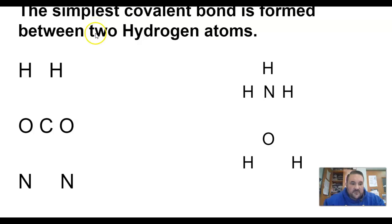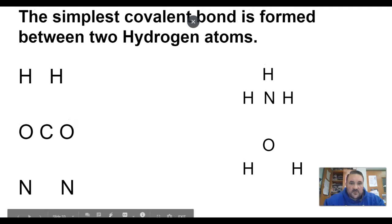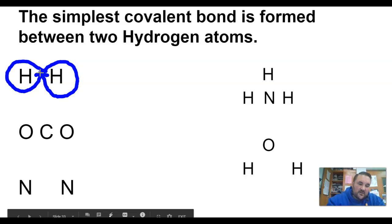So we often show how to look at covalent bonds by using electron dot diagrams. An electron dot diagram just draws in the valence electron, so hydrogen has one valence electron. This hydrogen has one valence electron, so they make a single bond. Sometimes they're over here, sometimes those electrons are over there, but they're full because they share two electrons.